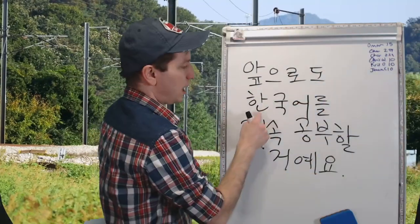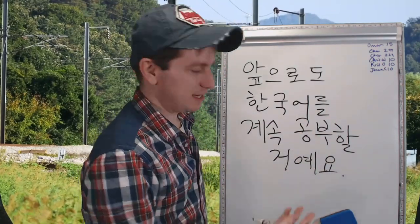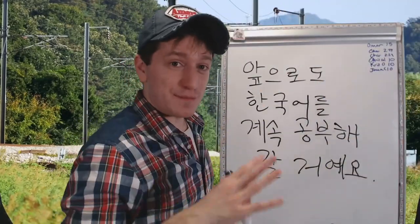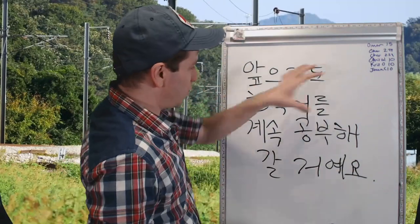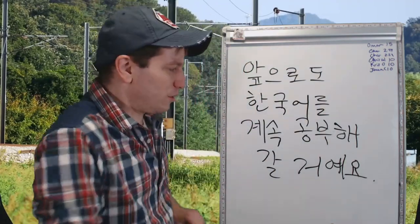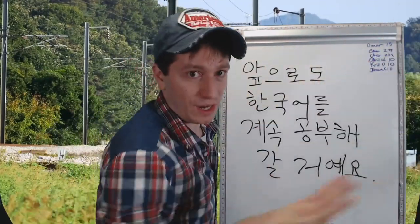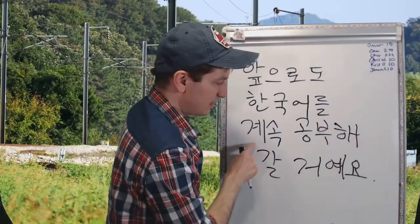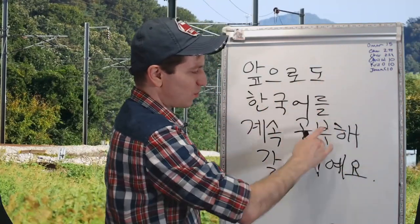앞으로도 한국어를 계속 공부할 거예요 — I'm going to keep studying Korean from now on. 공부해 갈 거예요 — I'm going to continue on studying Korean. Not just 'I'm going to keep studying Korean' but I'm going to continue from now on into the future. This emphasizes that the studying is going to go somewhere into the future — you're not just studying in general now, but continually studying into the future. 앞으로도 한국어를 계속 공부해 갈 거예요.